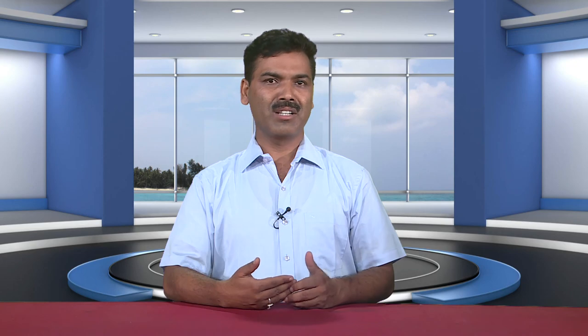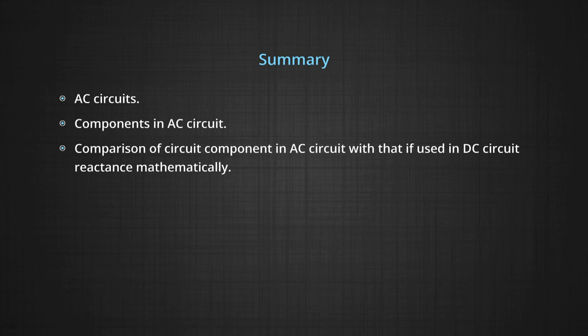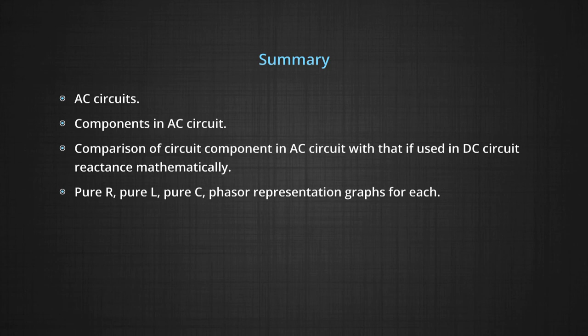In brief, what we have learned today: we covered AC circuits, components in AC circuits, comparison of circuit components, and reactance calculated mathematically. We discussed what happens when using a pure resistor, pure inductor, and pure capacitor in an AC source, and we completed phasor representation graphs for each. In the next module, we will discuss RLC circuits and combine R, L, and C when the circuit is connected to an AC source.